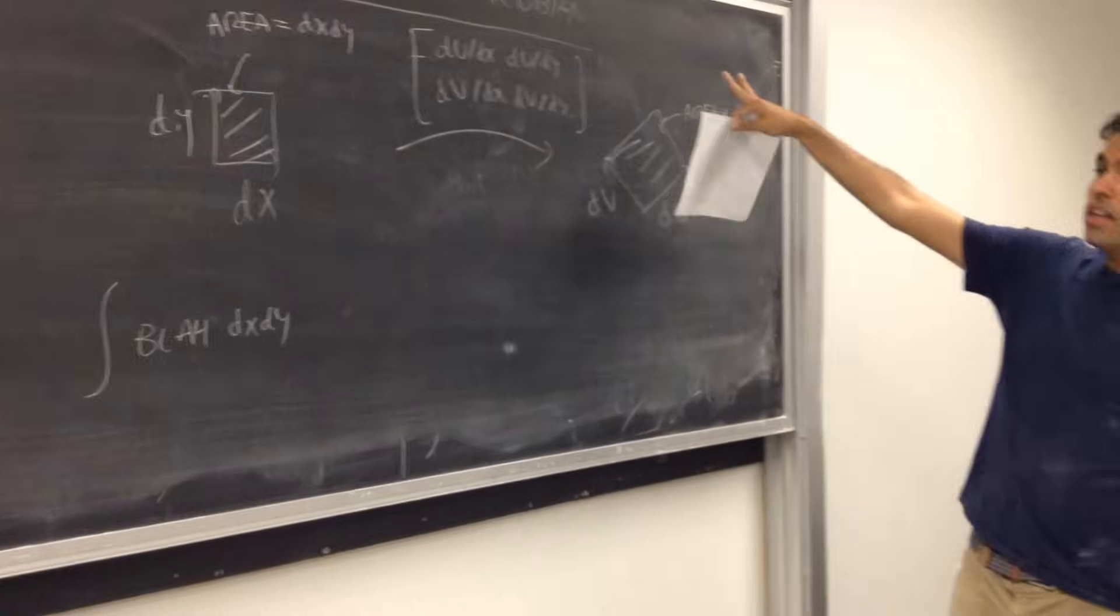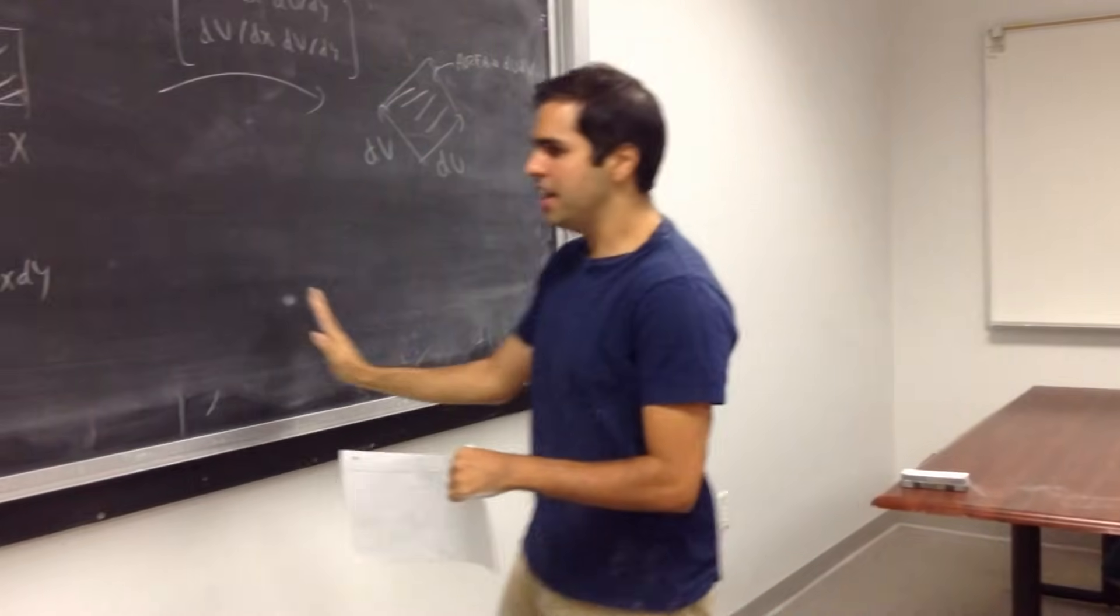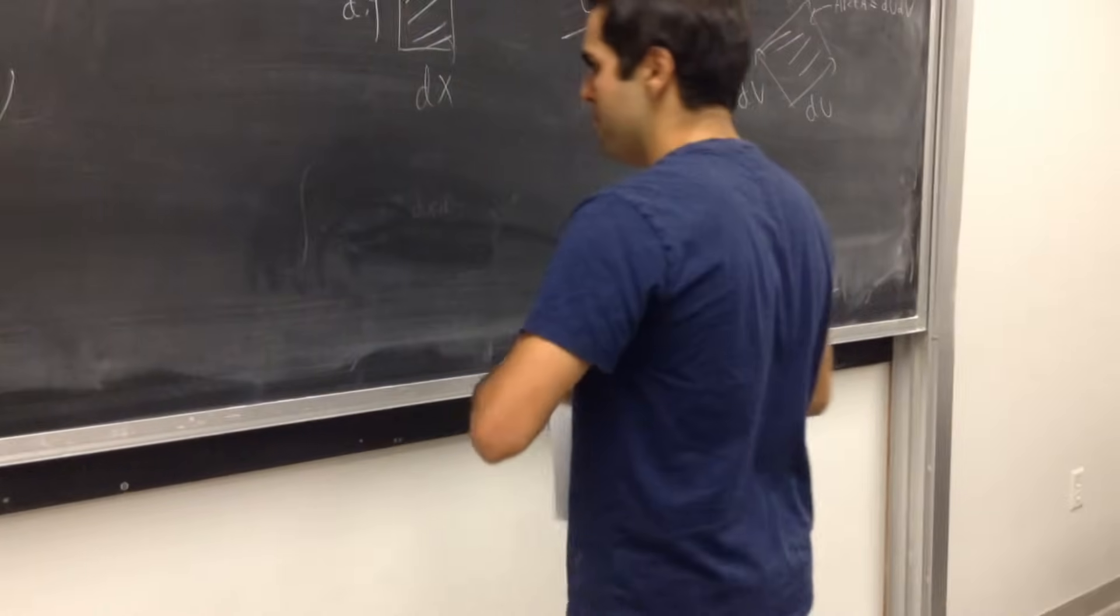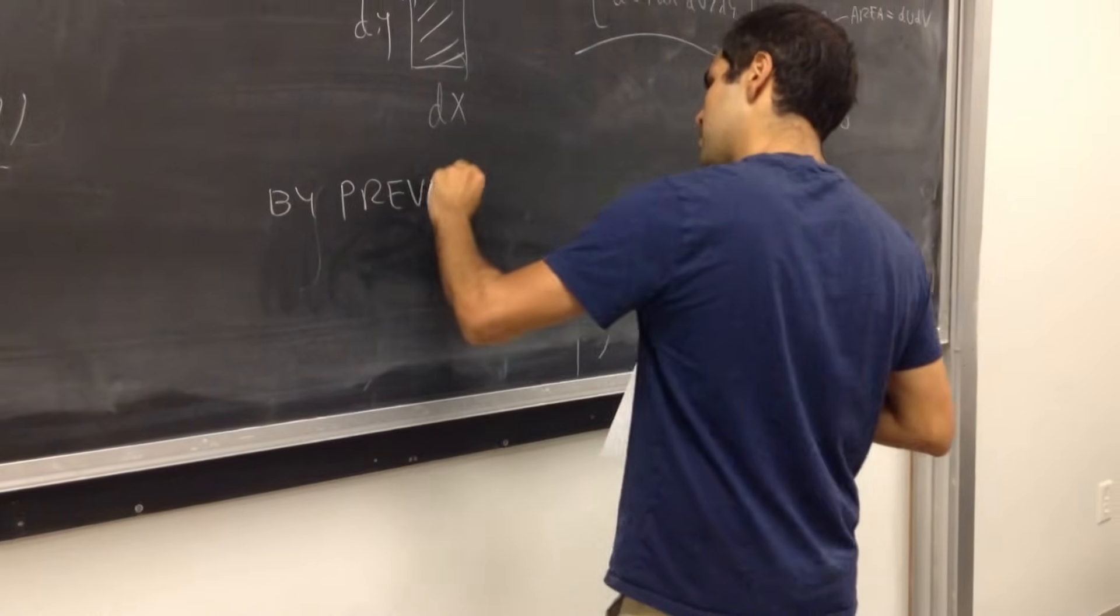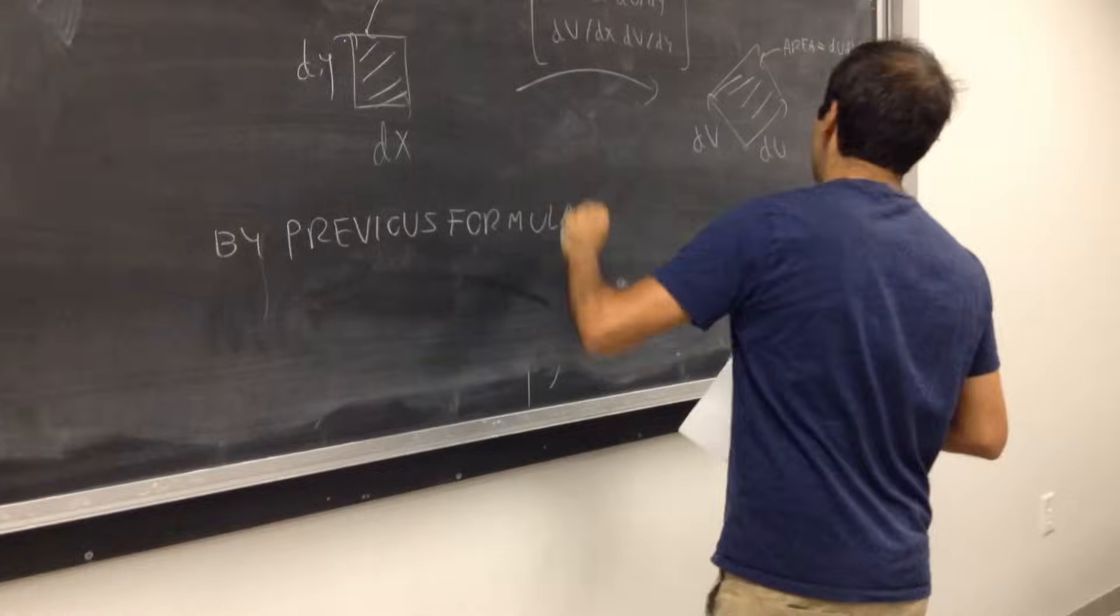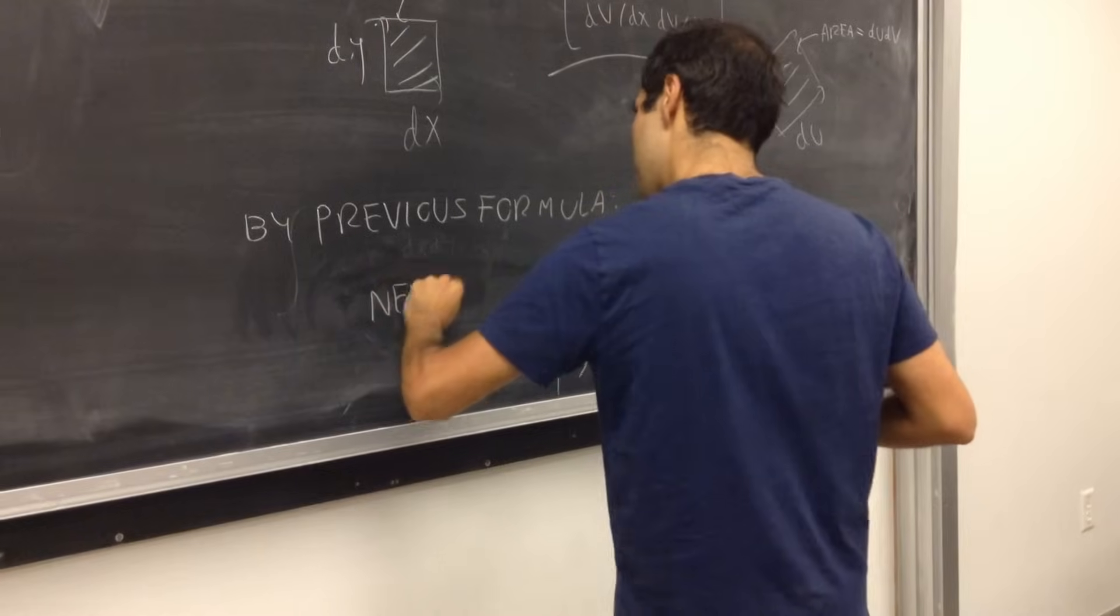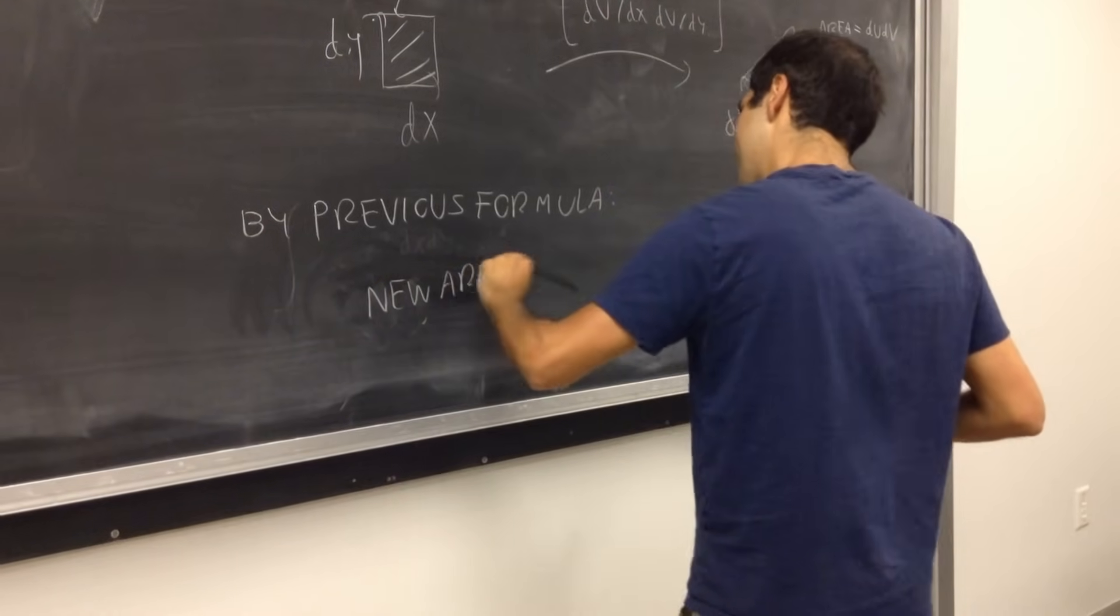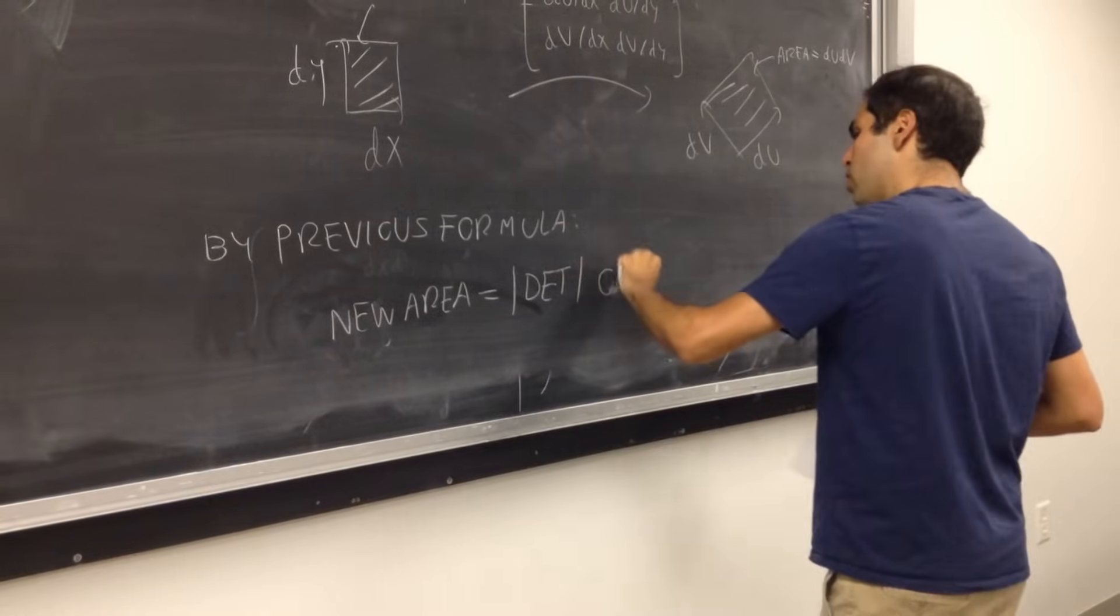Okay, but by the previous formula, we know that those two areas are related. So, by the previous formula, we know that du, dv, so new area, equals to absolute value of the determinant, times the old area.